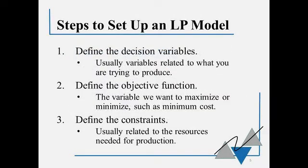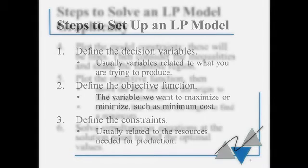There are three steps to set up a linear programming model. First, we define the decision variables — those are usually the things we're trying to produce. Second, we define our objective function, which is the thing we want to maximize or minimize, such as minimum cost. Third, we define our constraints, which are usually related to the resources we have — things that are going to limit our production.